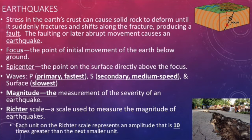Earthquakes release energy in three different forms. P waves, also known as primary waves, move the earth's surface like a slinky — they compress and decompress the earth as the energy moves. S waves, or secondary waves, move slower than P waves and follow more of an S shape; these cause more damage to the earth's surface than P waves. Last, we have surface waves. These are the slowest moving, but also the scariest, because they cause the most damage.